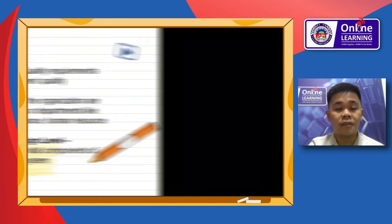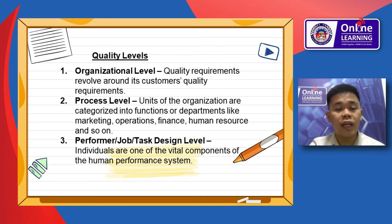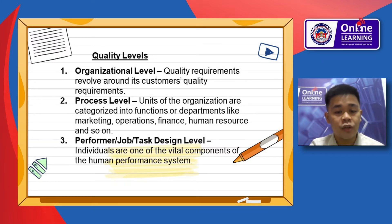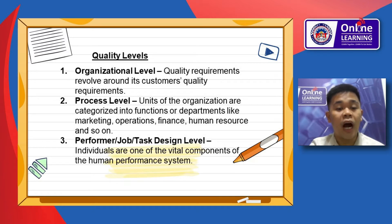For quality levels: at the organizational level, quality requirements revolve around the customer's quality requirements. At the process level, units of organization are categorized into functions or departments such as marketing, operations, finance, human resources, and so on. At the performer job task design level, individuals are one of the vital components of the human performance system.